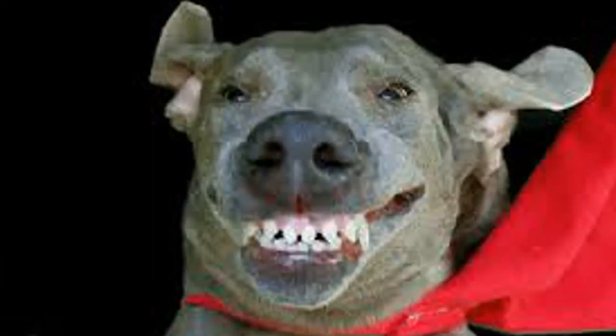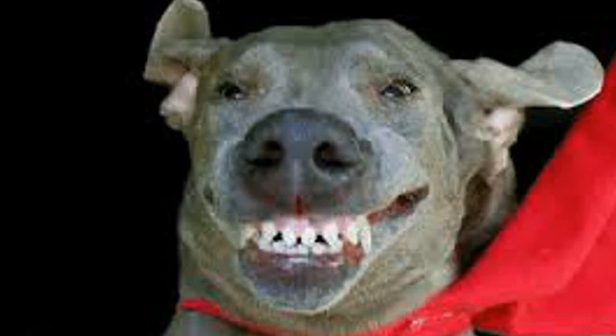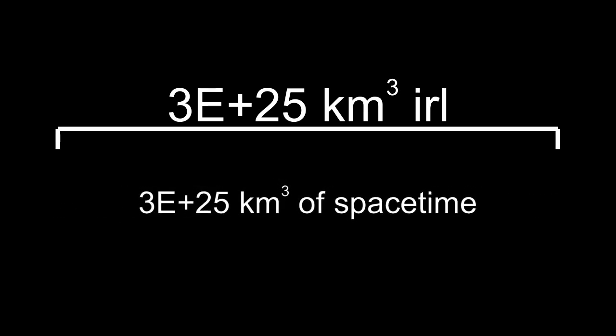For example, a star with a volume of 3e+25 cubic kilometers, which is typical for a star that will collapse into a black hole, would have a resulting black hole that has all the space-time from those 3e+25 cubic kilometers compressed into a point.